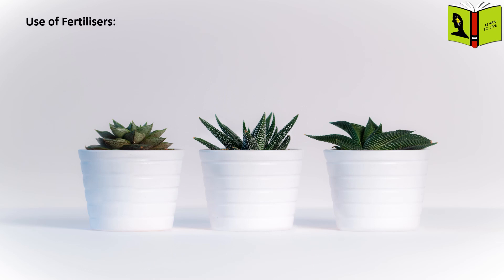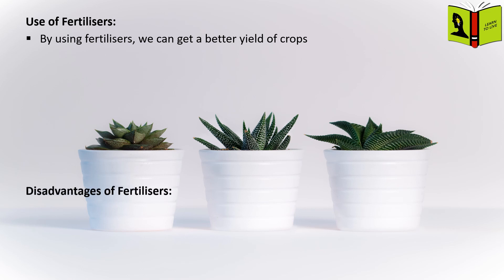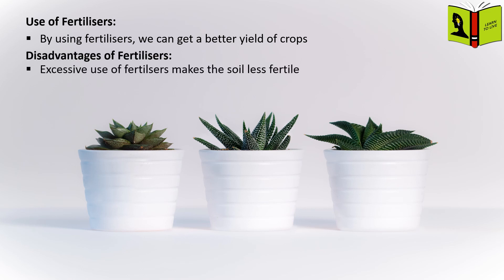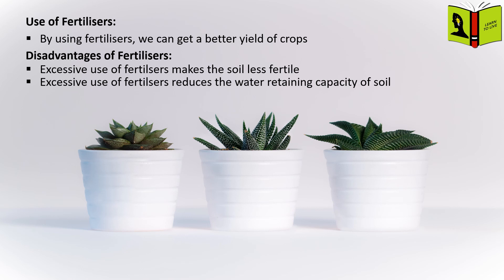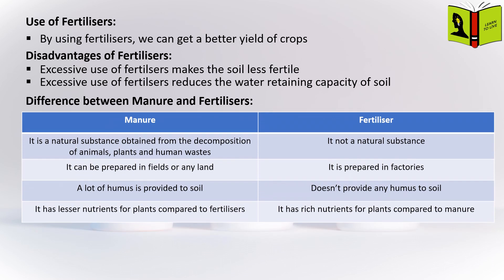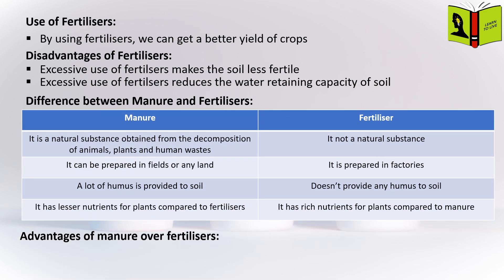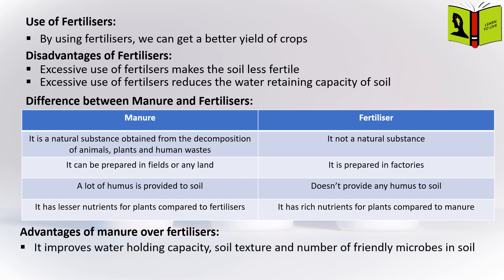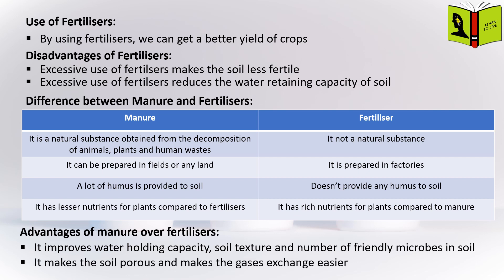Use of Fertilizers. By using fertilizers, we can get a better yield of crops. Disadvantages of Fertilizers: Excessive use of fertilizers makes the soil less fertile and reduces the water retaining capacity of the soil. Please check the table to understand the difference between manure and fertilizers — pause the video to read the table completely. Advantages of Manure over Fertilizers: It improves water holding capacity, soil texture, and the number of friendly microbes in the soil. It makes the soil porous and makes gas exchange easier.